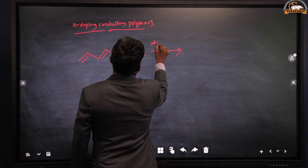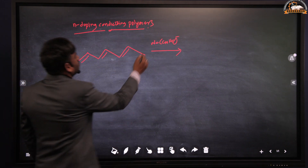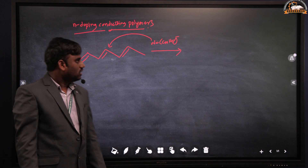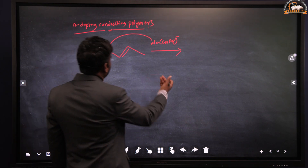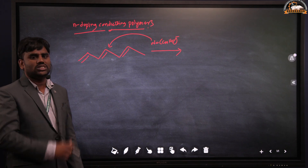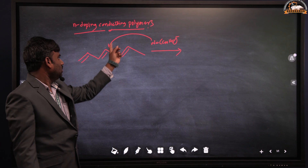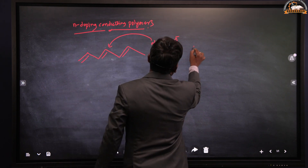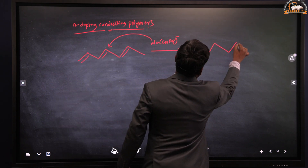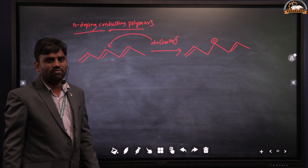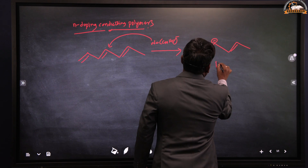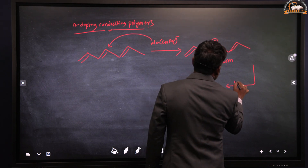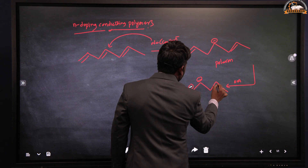Adding a Lewis base such as sodium naphthalate. Lewis base means electron pair donor or reducing agent. A reducing agent reduces another substance — here, while adding the reducing agent, the polymer gains electrons from the reducing agent. The number of electrons increases on the polymer chain, a negative charge forms, and a polaron is formed. Adding reducing agent one more time — again, a negative charge forms — a bipolaron.